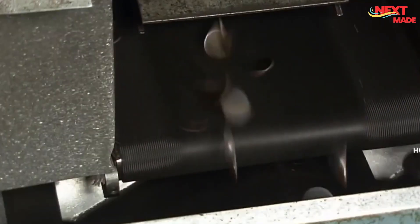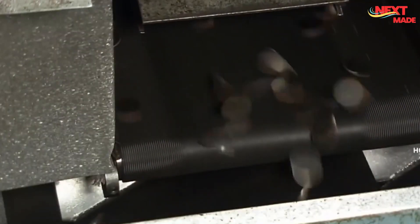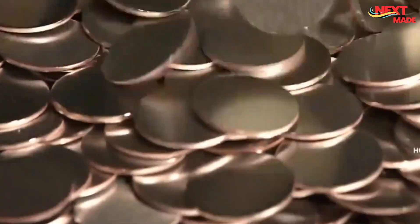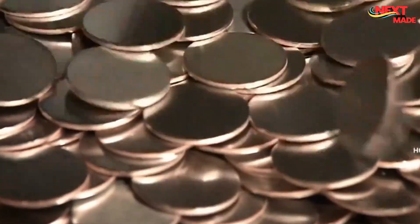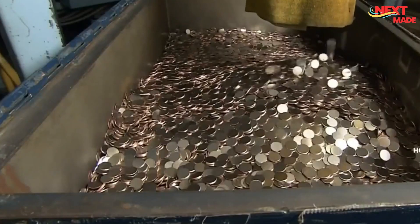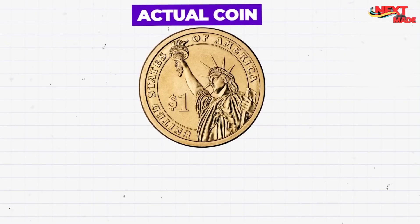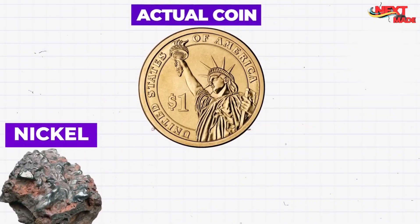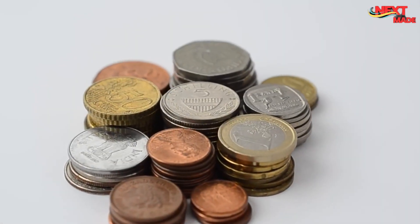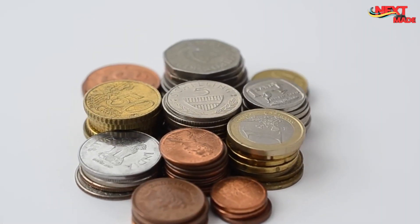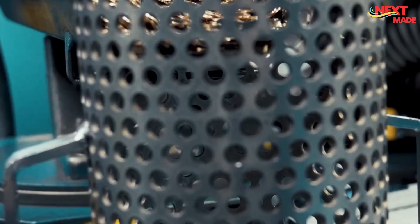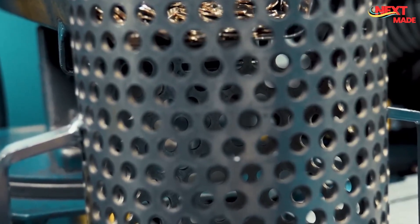Additionally, copper blanks' electrical conductivity is useful for coins used in electronic transactions. In the factory, strips of copper, nickel, or zinc are ready to be turned into coins. Each strip is about 1,500 feet long, which equals the length of five football fields.